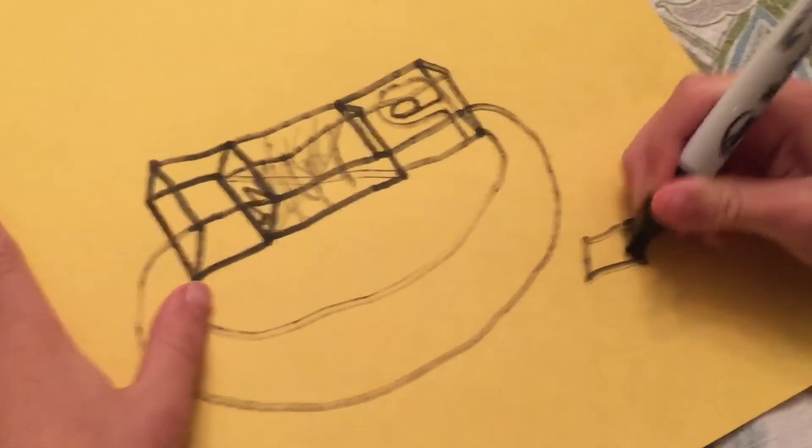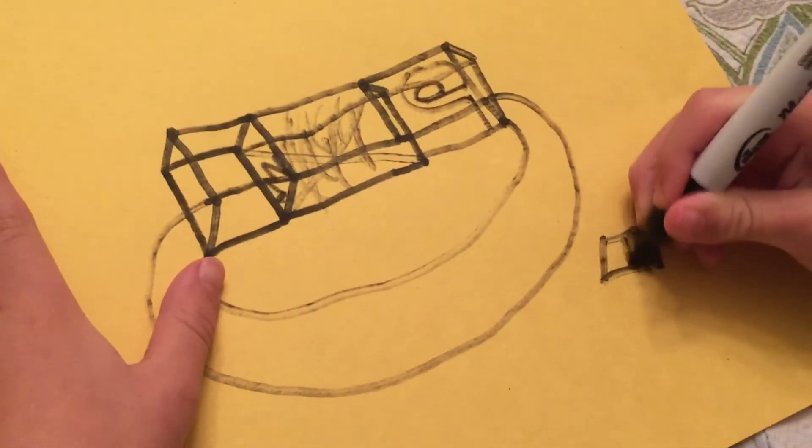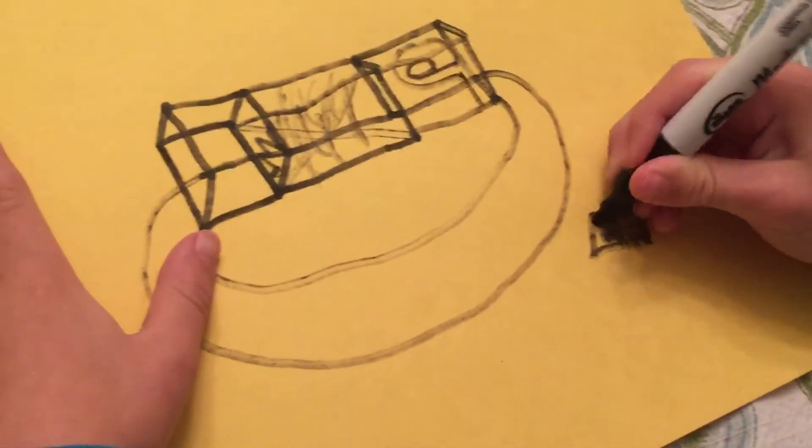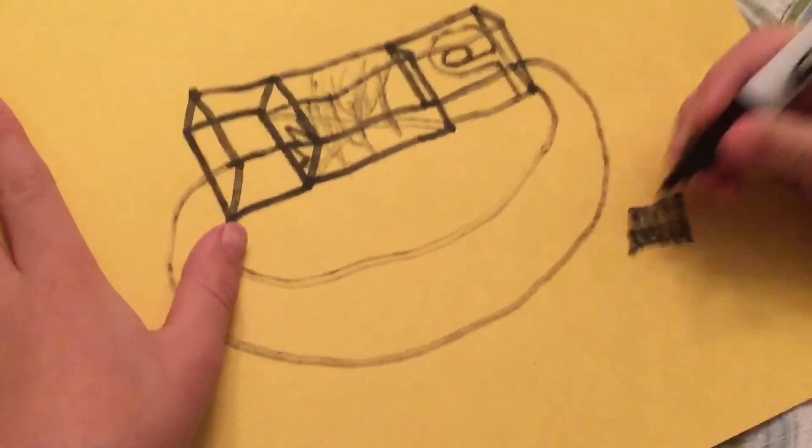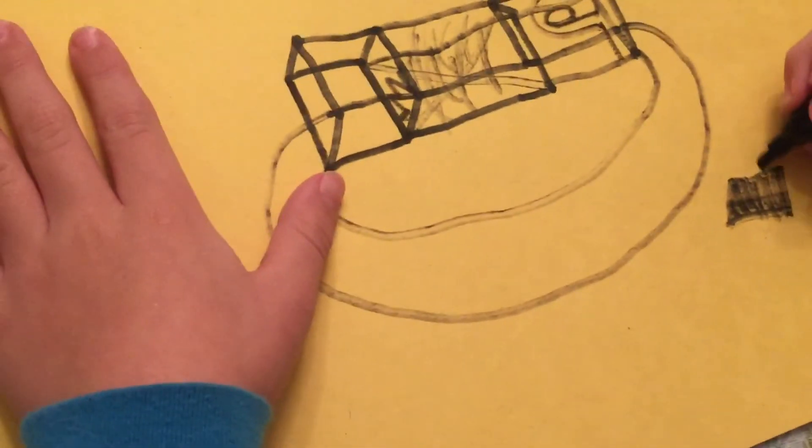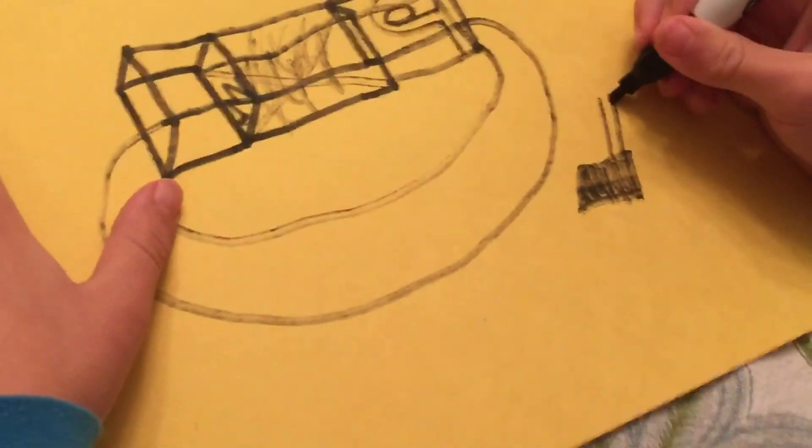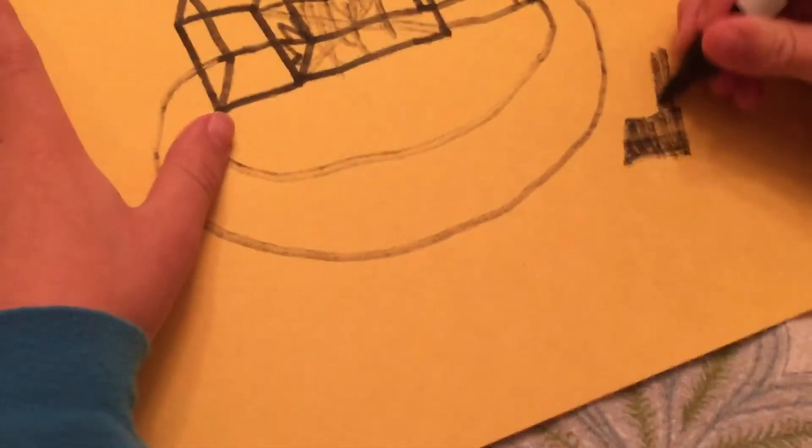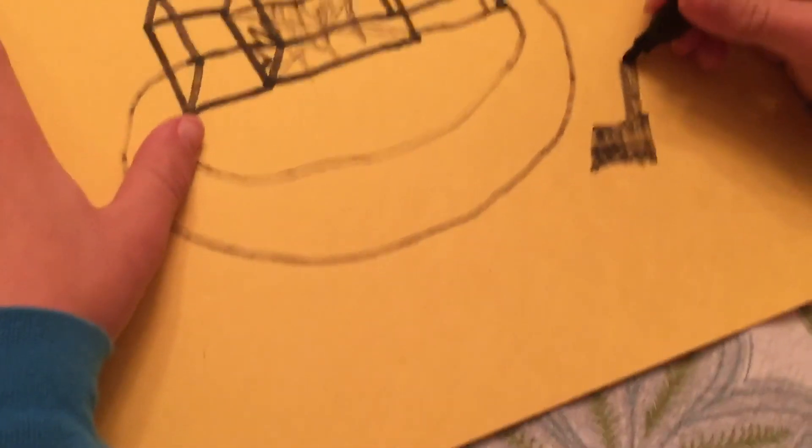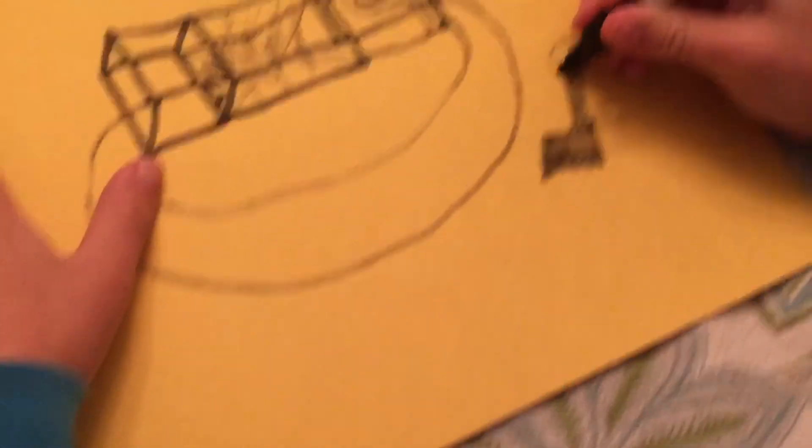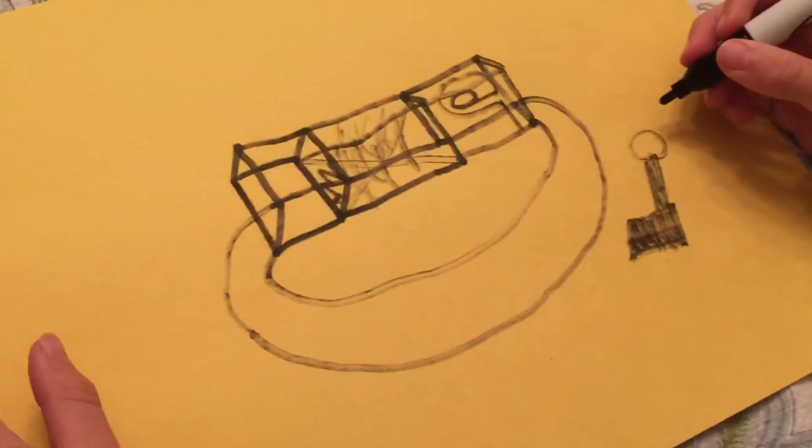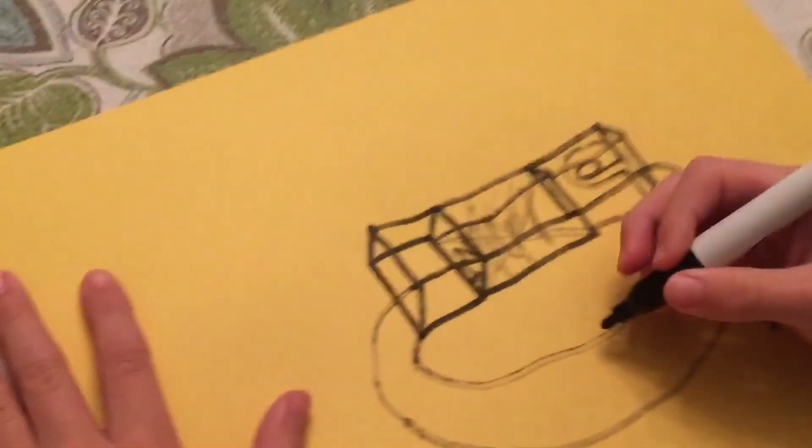Color that in. This might be loud. Okay. Now the handle. Color that in. And then a little round circle. Now we only need the...